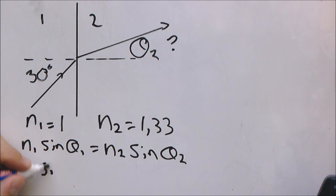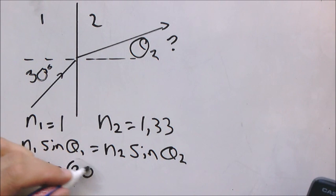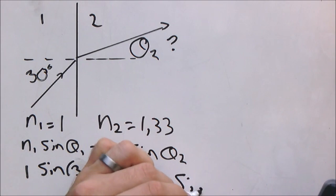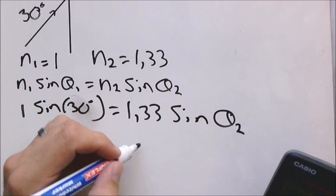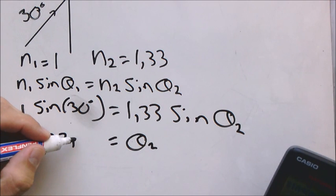Just get my calculator. So we've got 1 sine theta 1, which is 30 degrees, and 1.33 sine theta 2, which is the unknown. Sine 30 is a half, 0.5 divided by 1.33, and then we take the inverse function of sine. You will get an angle of 22.08 degrees for this scenario.